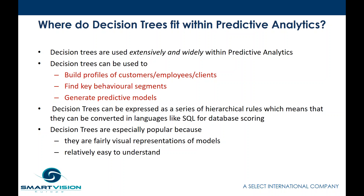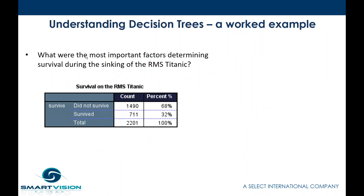Decision trees can be expressed as a series of hierarchical rules, which means they can be converted into common languages like SQL for database scoring. You could describe a decision tree as a series of: if you're in this group, then you're in this group, and there's an X percent chance you will do something. Decision trees are very popular because they're visual and relatively easy to understand — they're almost modeling in tiers.